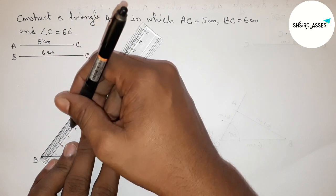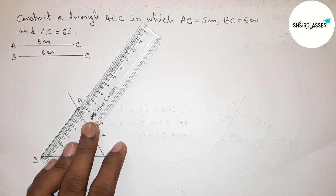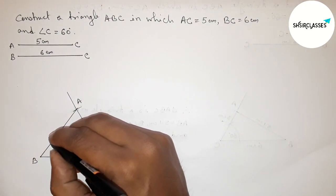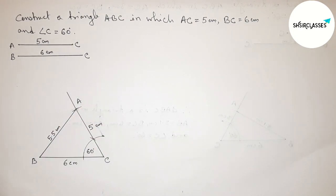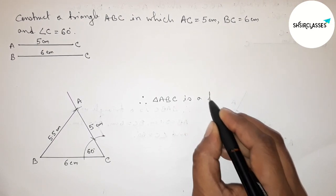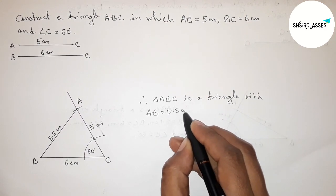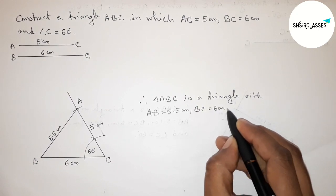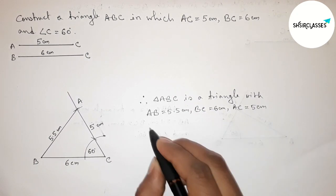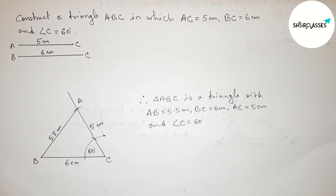Now measuring the length of AB — this is approximately 5.5 centimeter. Therefore triangle ABC has sides AB equals 5.5 centimeter, BC equals 6 centimeter, AC equals 5 centimeter, and angle C equals 60 degrees. That's all, thanks for watching. If this video is helpful to you, please share it with your friends.